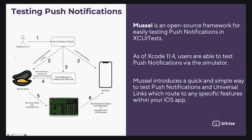Here is how Muscle works: an engineer triggers XCUITests in Xcode manually or through your continuous integration platform such as Bitrise. The Muscle server boots up along with the iOS simulator. A test case triggers a push notification or universal link test. The test case sends a payload containing push notification or universal link data via a POST request. The server runs the respective xcrun simctl command for push notifications or universal links.